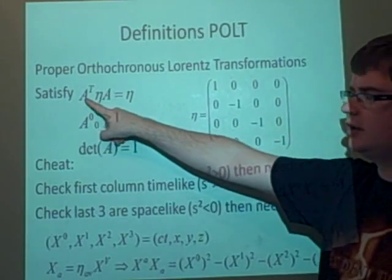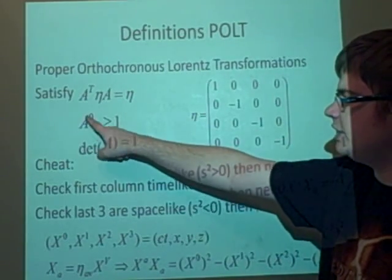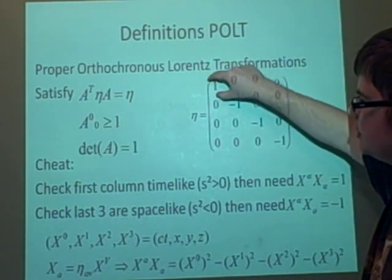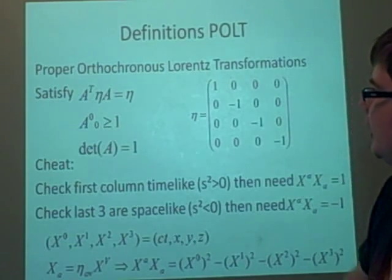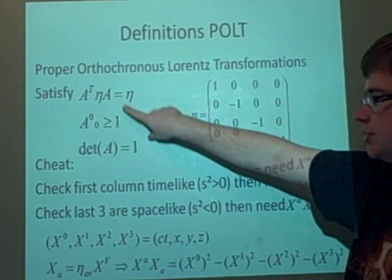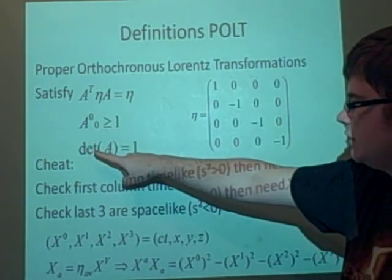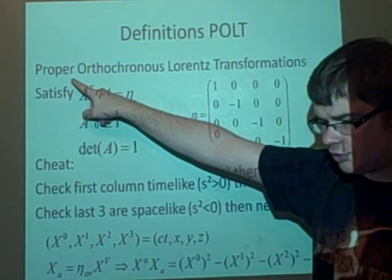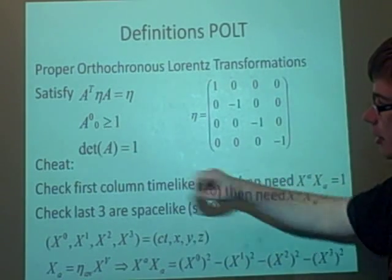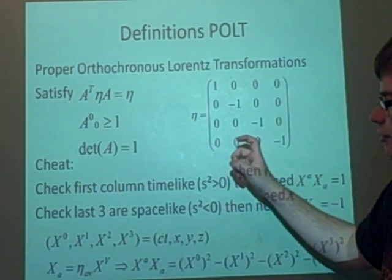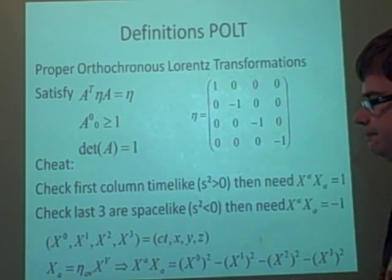What we do with this is first check that the matrix transpose times nabla times the matrix itself is equal to nabla. We also have to check that A^0_0, the first element of the matrix, is greater than or equal to 1 — this is checking that it's orthochronous, meaning time goes in the right direction. And we have to check that the determinant of the matrix equals 1, which means it's proper and preserves orientation. If the determinant is minus 1, it's improper and doesn't preserve orientation.